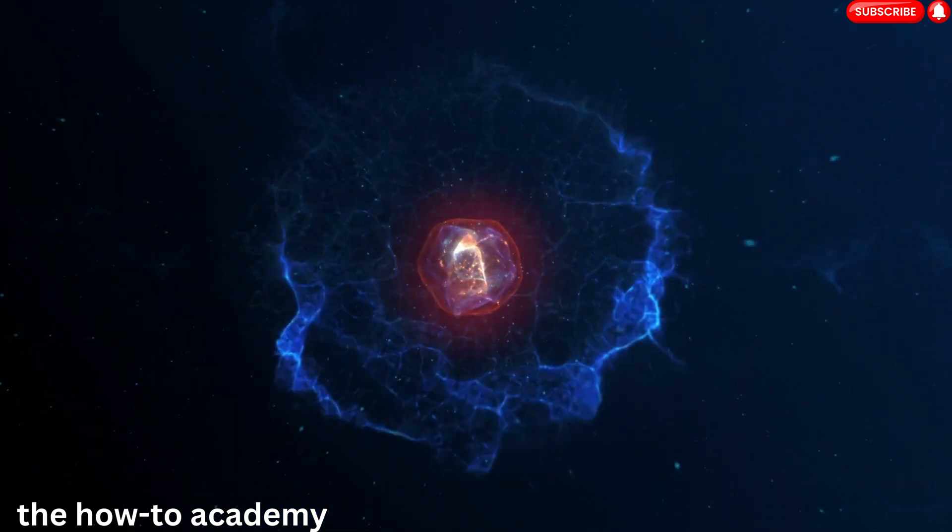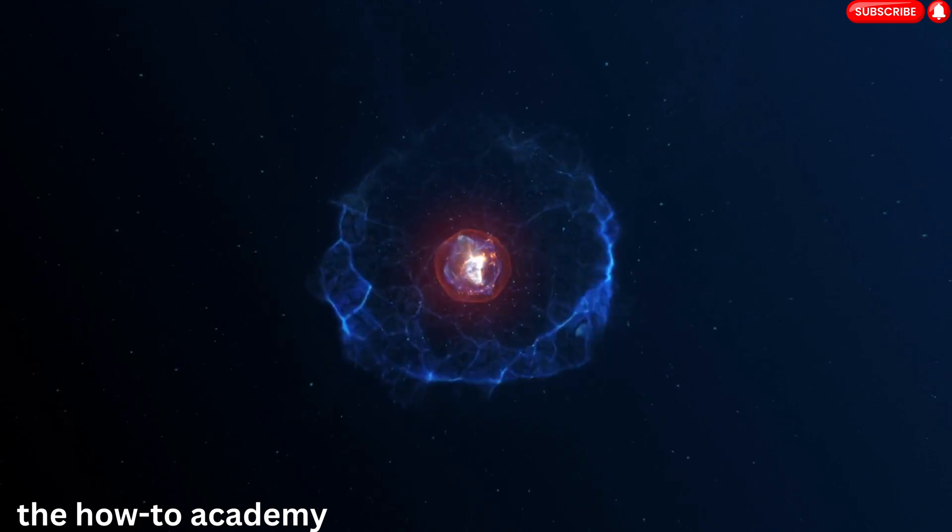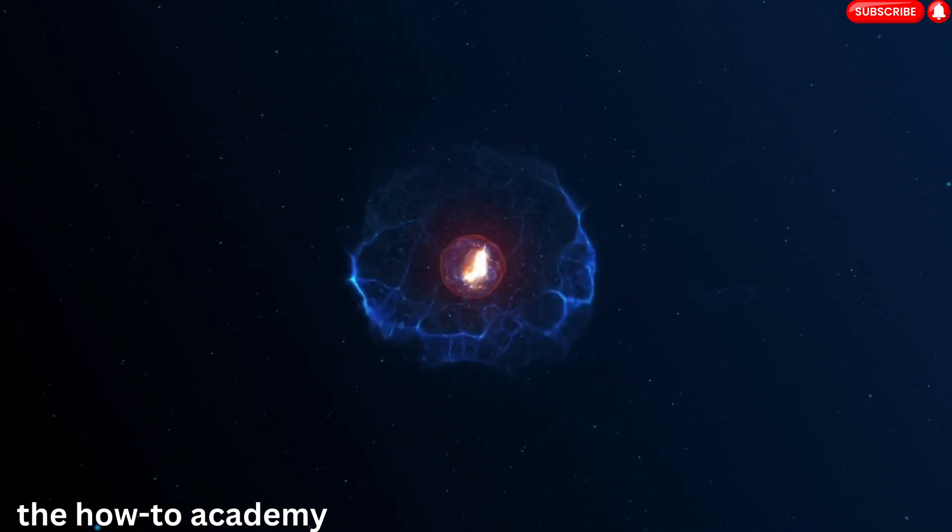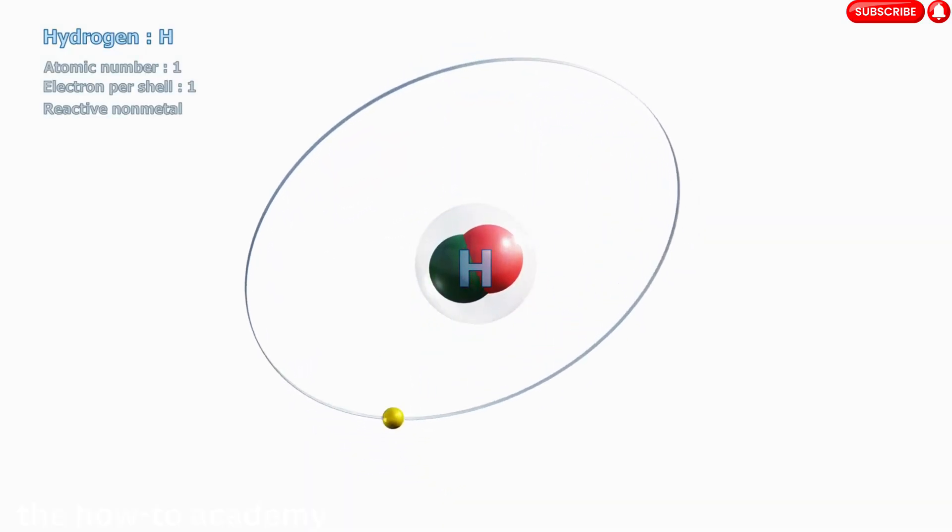Electrons carry a negative charge in orbit around the atom's nucleus, which contains the positively charged protons and neutral neutrons. This delicate balance of charges is what keeps atoms stable.